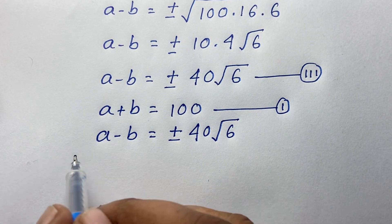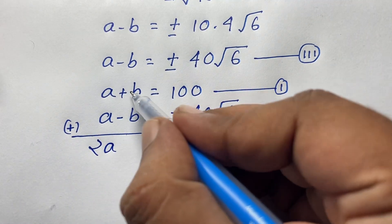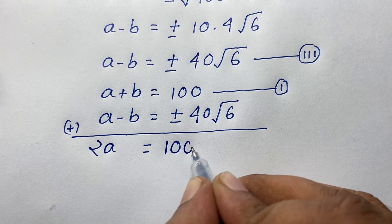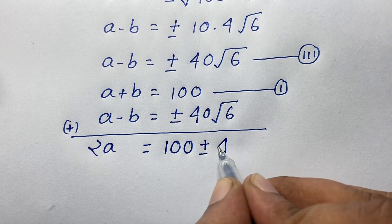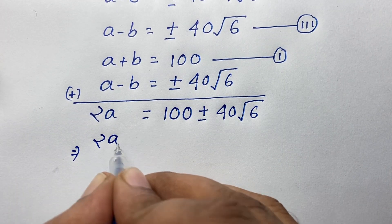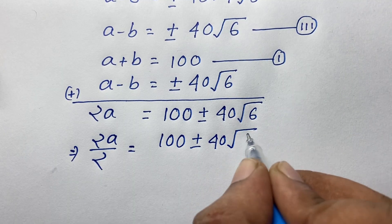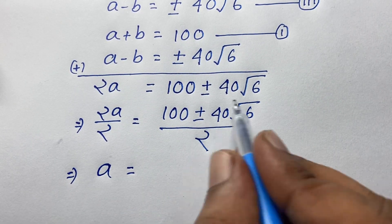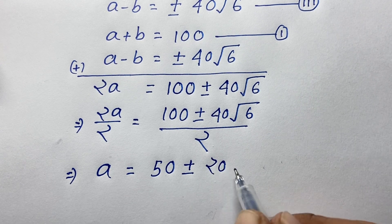Now if I add both equations: a plus a gives 2a, and b minus b cancels to 0. So 2a equals 100 plus or minus 40 square root 6. Dividing both sides by 2: a equals 100 over 2 plus or minus 40 over 2 square root 6, which gives a equals 50 plus or minus 20 square root 6.